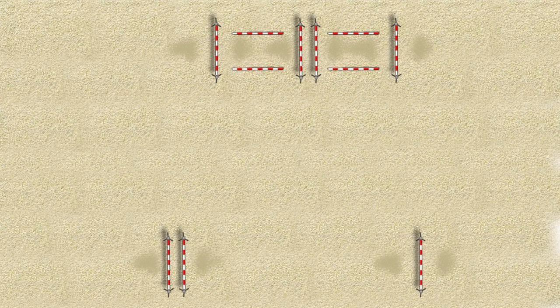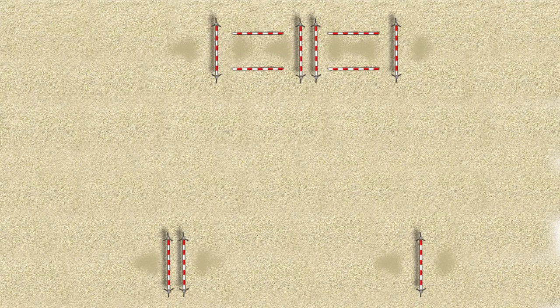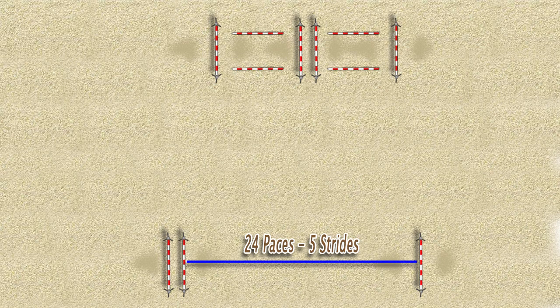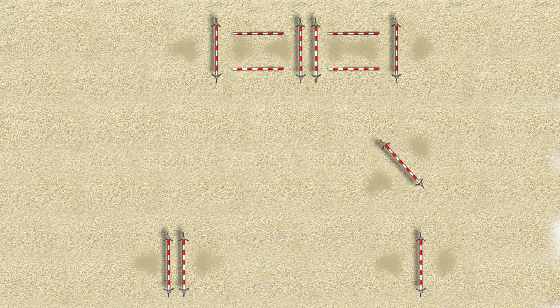You then set up this line down the bottom alongside of your arena: oxer to vertical. It rides down on five strides, so it walks 24 paces.